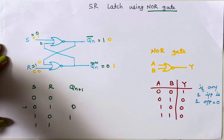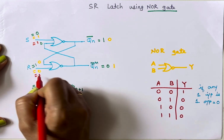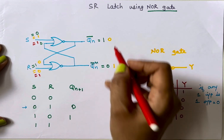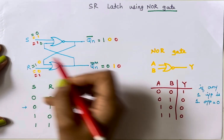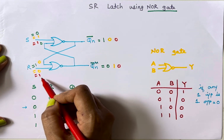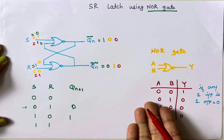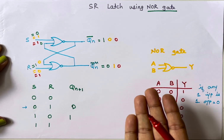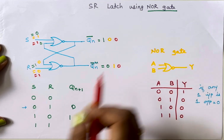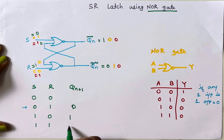For S=1, R=1: both inputs are one. Since any one input is one, output of both NOR gates is zero. But this is not valid — if one output is zero, the other must be the inverted version. So S=1, R=1 is the invalid state for the NOR SR latch.